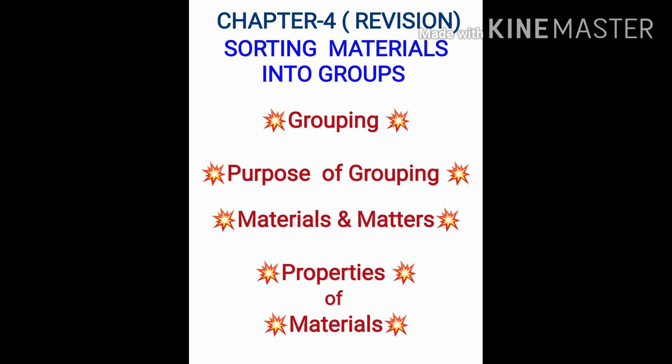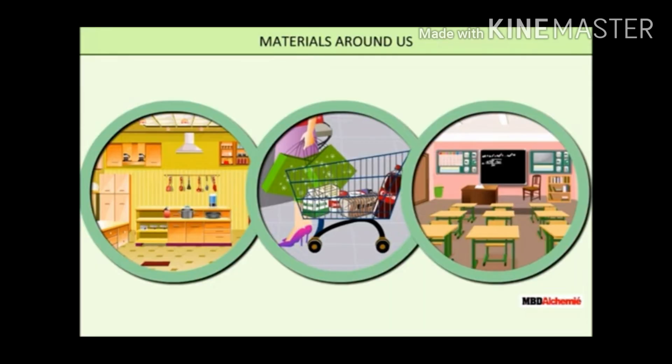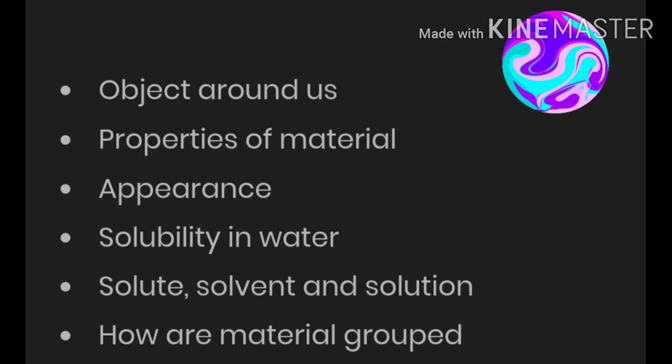What are the properties based on which materials are classified? Can you imagine what will happen if the things around us — at home, in the shopping mall, or in the classroom — are not classified? Our life will be messed up. We will not know where to find things. Classification is not confined to only living things; non-living things can also be classified.